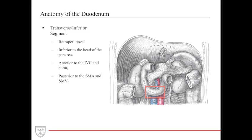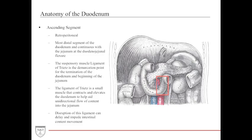The third segment is the transverse or inferior segment. It is retroperitoneal, inferior to the head of the pancreas, sitting anterior to the IVC and aorta but posterior to the SMA and superior mesenteric vein. The fourth and last is the ascending segment, also retroperitoneal, the most distal segment of the duodenum, continuous with the jejunum at the duodenojejunal flexure.